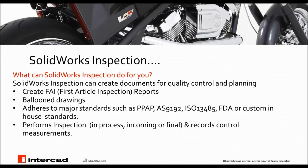SOLIDWORKS Inspection can create documents for quality control and planning, and create FAI or first article inspection reports. It will automate the process of ballooning drawings and adhere to major standards — it could be PAAP, AS9192, ISO 13485, FDA, or custom in-house standards. It will perform inspection whether it is in-process, incoming or final, and it will record control measurements.